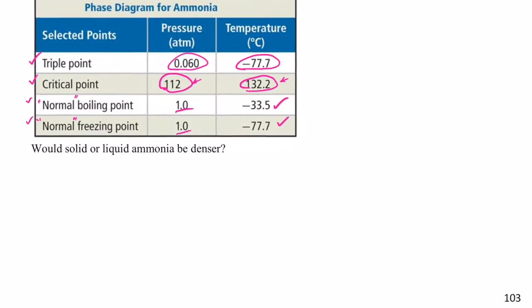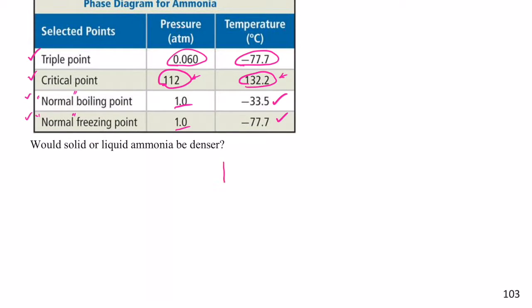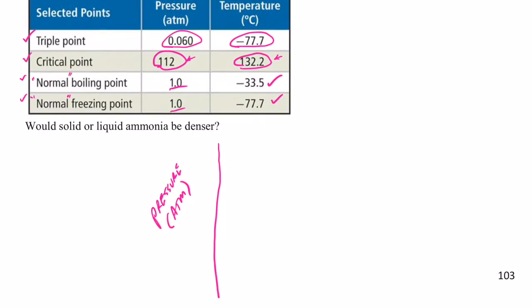So with that data in mind let's go ahead and construct our phase diagram. We'll begin by drawing our y-axis and of course our y-axis is pressure in atmospheres and our x-axis is temperature in degrees Celsius. Let's start with our triple point. Now remember these phase diagram graphs are not necessarily to scale. I'm going to call my pressure 0.060 atm and the temperature negative 77.7 degrees Celsius and we'll put a dot right there. That is my triple point.